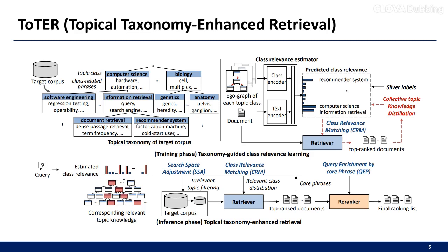2TR initially integrates the provided taxonomy with the target corpus during the training phase, and subsequently enhances PLM-based retrieval during the inference phase. In the inference phase, 2TR incorporates three strategies to complement the existing retrieve-then-rerank pipeline. Each strategy is tailored to progressively refine the ranking process at a finer granularity.